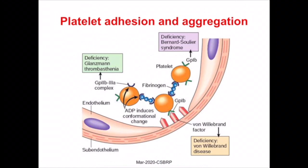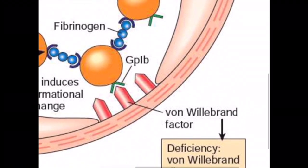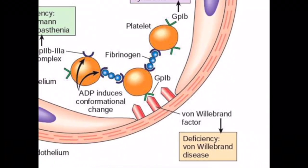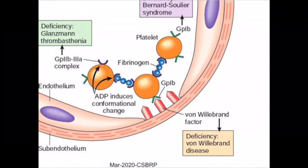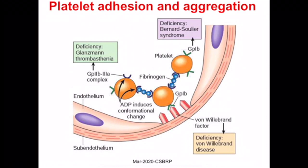This diagrammatic representation shows platelet adhesion and aggregation. Exposed collagen binds platelets through von Willebrand's factor, which itself binds with platelets via glycoprotein 1b. Aggregation takes place with binding of glycoprotein 2b/3a molecules through fibrinogen. Later there is a release reaction which is responsible for platelet plug formation.